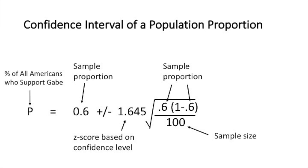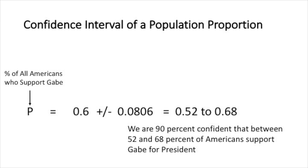We now have all the information we need to calculate our confidence interval. The percentage of all Americans that support Todd Gabe for president equals our sample proportion of 60% plus or minus 1.645 — the z-score based on our 90% confidence level — multiplied by the standard error of the sampling distribution, which is the square root of 0.6 times (1 minus 0.6) divided by the sample size of 100. This gives us 60% plus or minus about 8% (0.0806), yielding a confidence interval of 52% to 68%. We are 90% confident that between 52% and 68% of Americans support Todd Gabe for president.